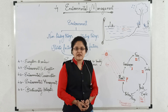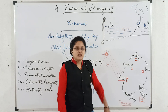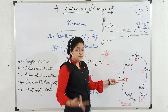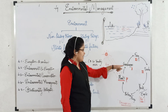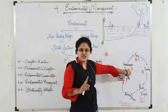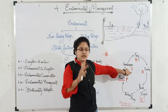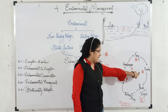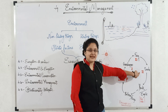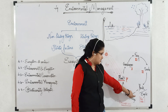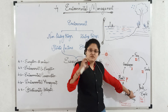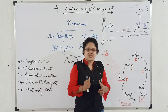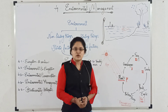Now we will see trophic levels. Each step of the food chain is a trophic level. Plants are called as producers and it is the first trophic level. Grasshopper is the primary consumer and hence it is the second trophic level. Frog is the secondary consumer and it is the third trophic level. Snake is the tertiary consumer and it is the fourth trophic level. Hawk and eagle are the top or apex consumers and it is the fifth trophic level. And bacteria and fungi are decomposers and it is the sixth trophic level.